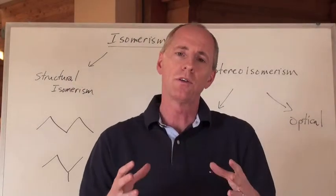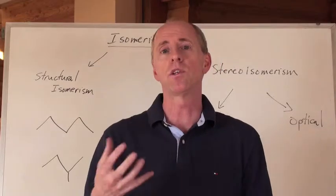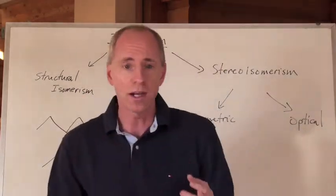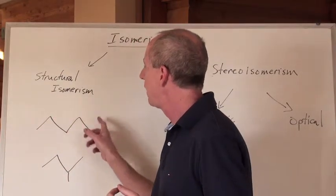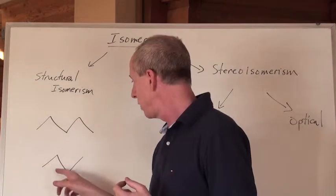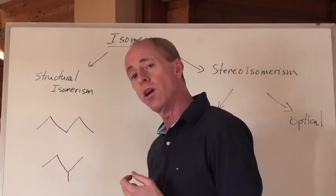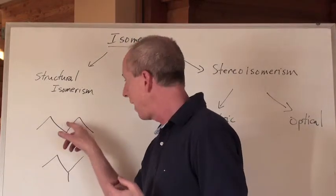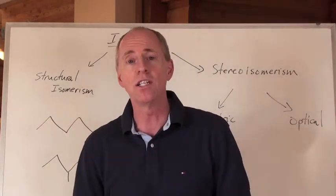When we talk about chemicals that have the same formula but different structures, we're talking about isomers. We've already talked about isomers where we took things like one, two, three, four, five — that's pentane, all single bonds. And this one is going to be a methyl butane: one, two, three, four is the longest chain, there's a methyl branch on a butane, so that's methyl butane. Those are called structural isomers of each other.